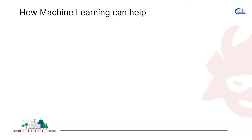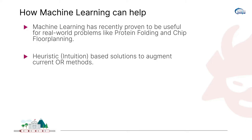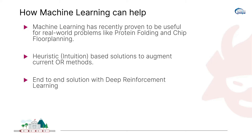Machine learning has recently proven to be useful for real-world problems like chip flow planning and protein folding. Machine learning need not necessarily mean a reinforcement learning agent — for example, you could augment an OR method to use a heuristic derived from a machine learning model to enable better decisions. Alternatively, you could push for a complete end-to-end deep RL solution. The best example would be AlphaGo by DeepMind in the game of Go. This gives us the confidence that there is quite a lot to exploit in this field.